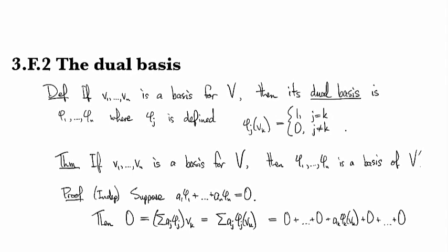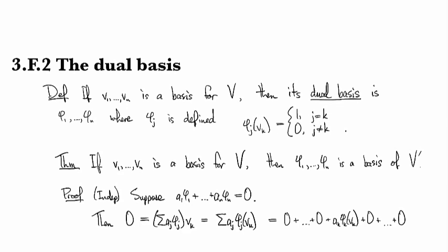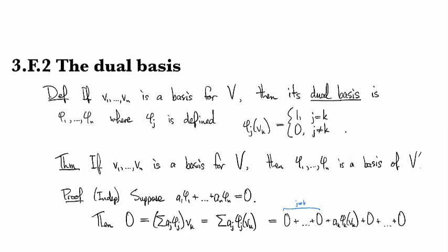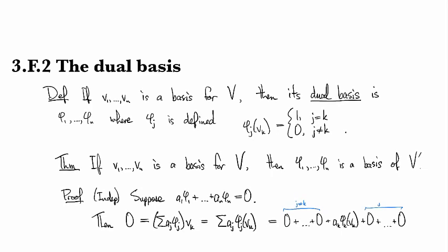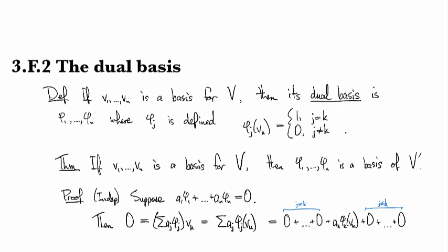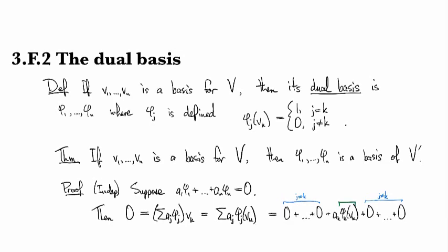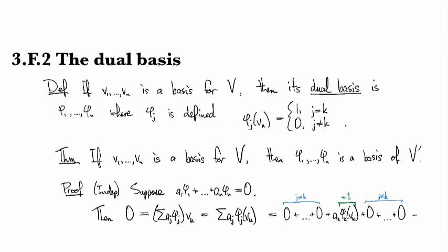And so this is where j is not equal to k. And so then where j equals k, this one here is actually equal just to 1. So if we look at what shakes out of this whole calculation, it's just exactly ak.